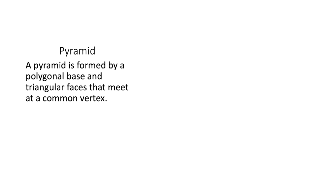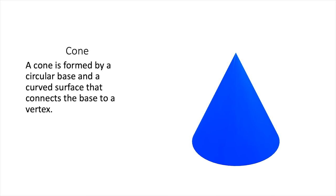So if we've already talked about the pyramid, let's talk about the circular version of a pyramid, which is a cone, like ice cream cone, or like traffic cone. So a cone is formed by a circular base and a curved surface that connects the base to a vertex. So it's basically just a circular pyramid. That's the idea.